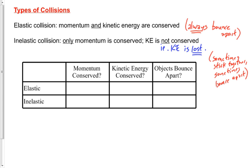What about an elastic collision? Truthfully, there aren't many examples of truly elastic collisions. The best example on a macroscopic scale — a scale we can see — would be two billiard balls hitting each other and bouncing apart, or two marbles hitting and bouncing apart. Those aren't truly elastic either, but they're very, very close.